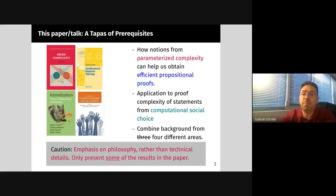In a nutshell, we see how notions from parameterized complexity can help us obtain efficient propositional proofs. We apply this to proof complexity of statements from computational social choice and continue our work on statements from combinatorial algebraic topology. Because of this diverse background, I'm not going to insist on technical details. I hope to convey the general philosophy and I'm not going to fully present all the results in the paper.